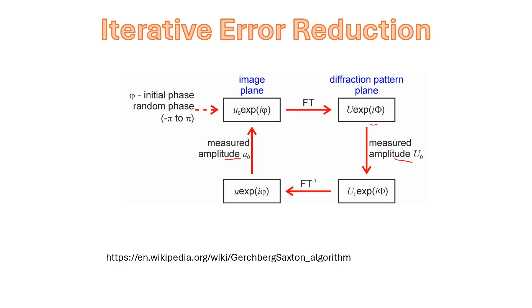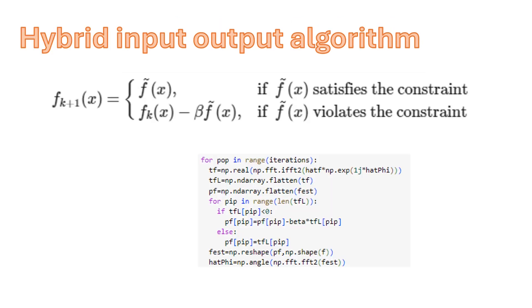There can be improved versions of this algorithm. Here we're looking at the hybrid input-output algorithm that was developed by Jim Fienup. This algorithm uses a relaxation parameter. Rather than just fully correcting the field to match the constraint, you have this relaxation parameter beta. This is implemented in the GitHub code that's supplied with the course, where we have the measured Fourier transform hat f and we're going to add to that a phase estimate that we iteratively correct.